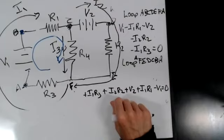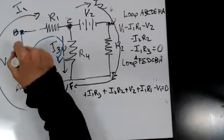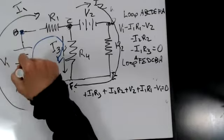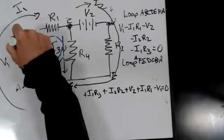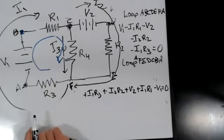For resistors, it's the direction of the current that matters. For the battery, it's just the direction you're going around the loop — adding V1 going one way, subtracting V1 going the other way.